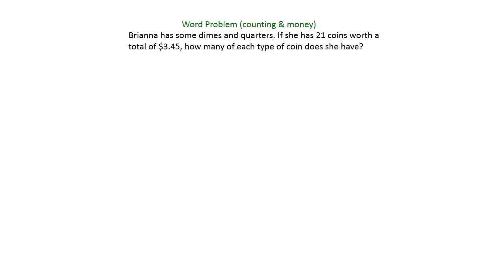In this example, we're going to use a system of equations to find how many dimes and quarters a person has if she has 21 coins worth a total of $3.45.